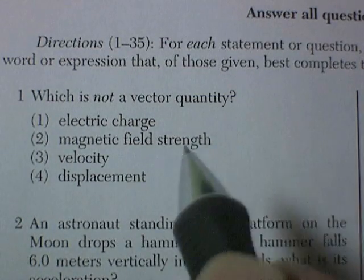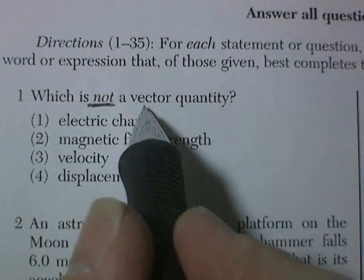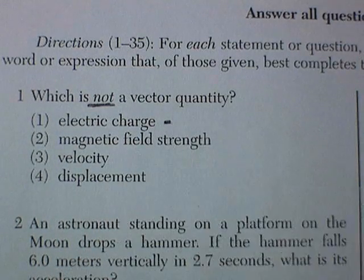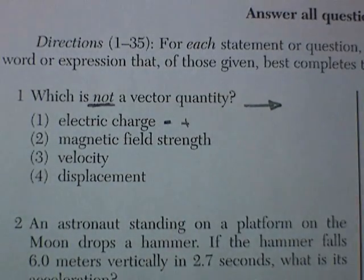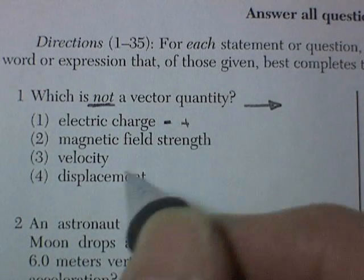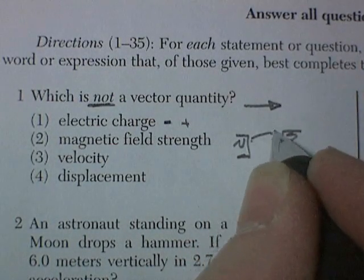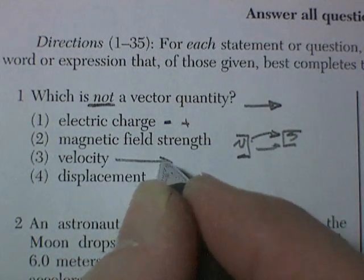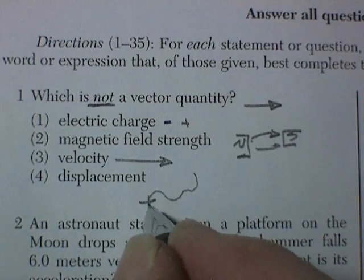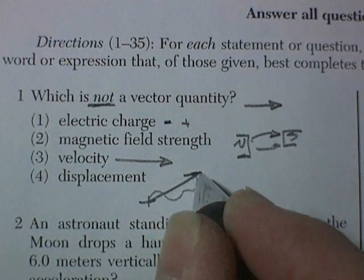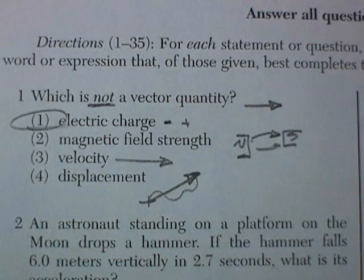Question 1: which is NOT a vector quantity? First time I read this I went looking for the vector — I want to look for a thing that isn't a vector. Electric charge is plus or minus. A vector is drawn with an arrow, and I don't remember drawing plus or minus with arrows. Magnetic field strength — we've been drawing those with arrows. Velocity — that's always an arrow. Displacement — always drawn with a vector. So which one is not a vector quantity? That would be choice one: electric charge.